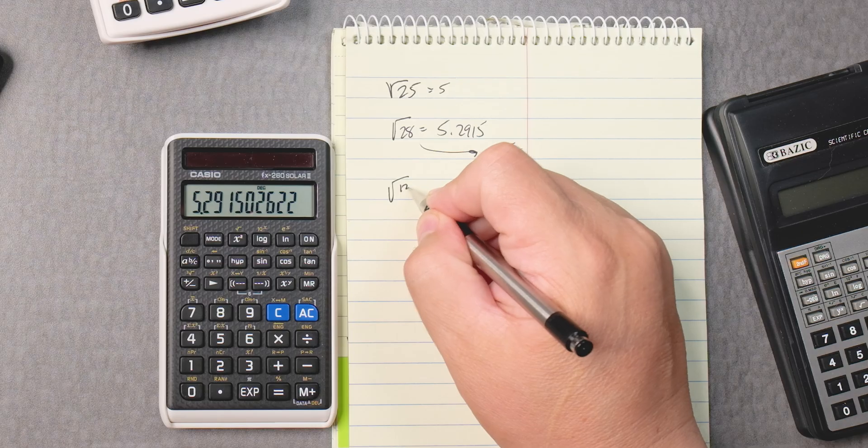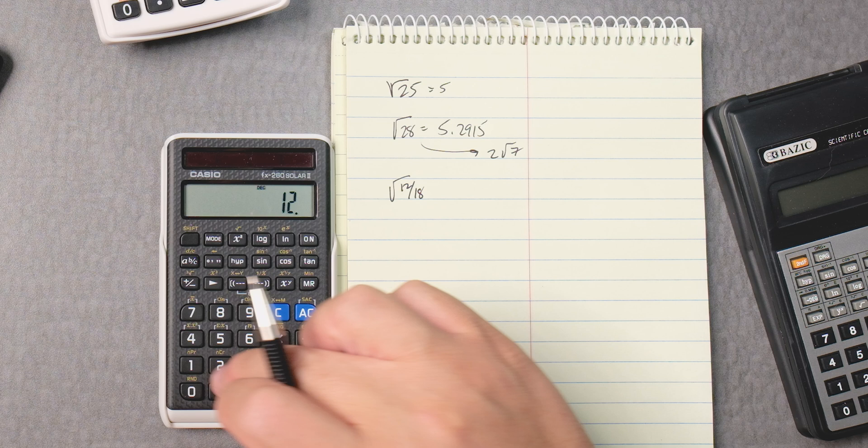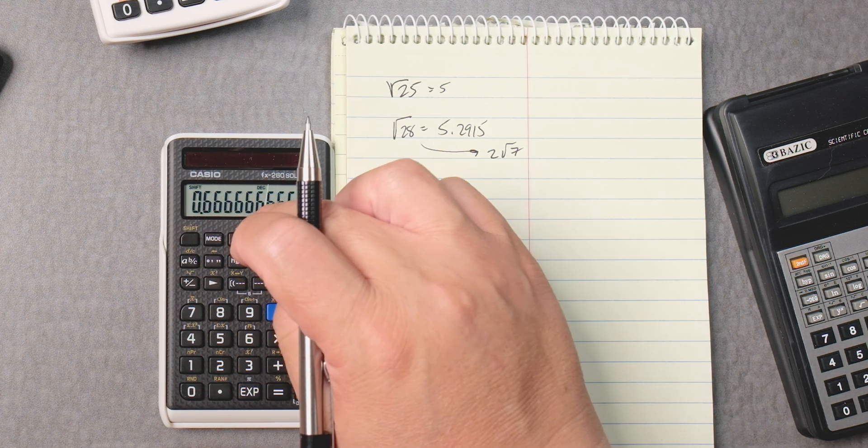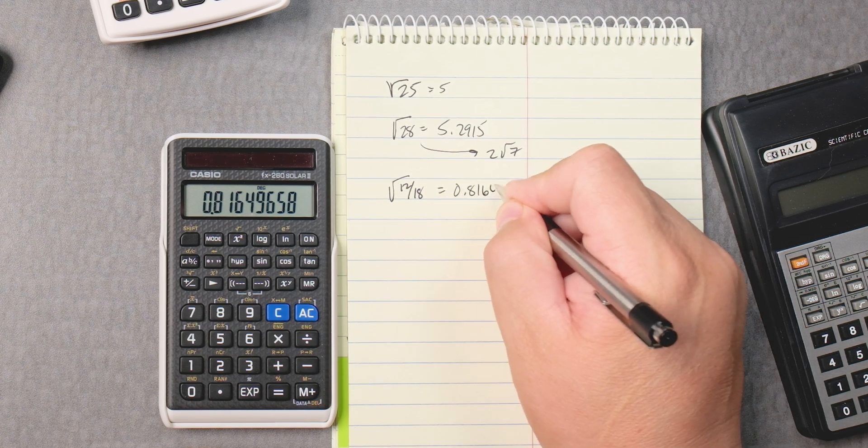Let's take the square root of 12 over 18, okay? So here we say 12 divided by 18, you've got to press the equals. Then shift x squared and it gives you 0.8164, which is the answer.